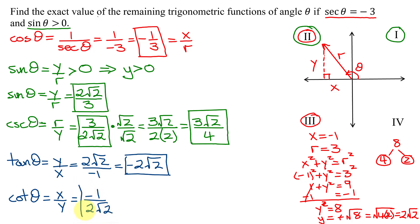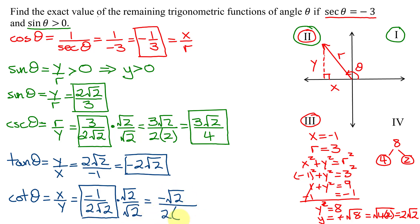If you're allowed to leave radicals in the denominator, that's your answer. But if you need to rationalize, multiply numerator and denominator by √2: I get negative √2 divided by 2 times 2, so the cotangent of theta is negative √2 over 4. I've now found all five remaining trig functions for angle theta.